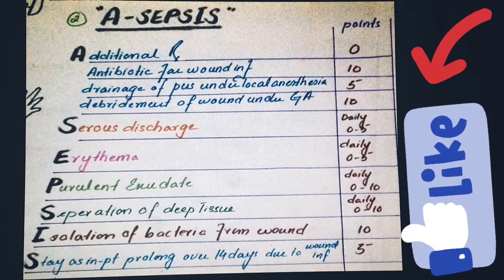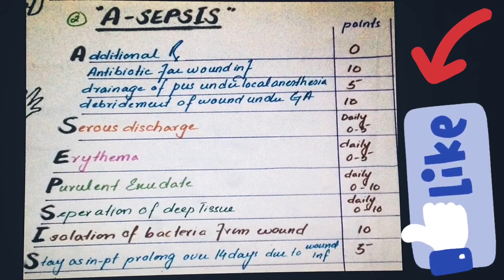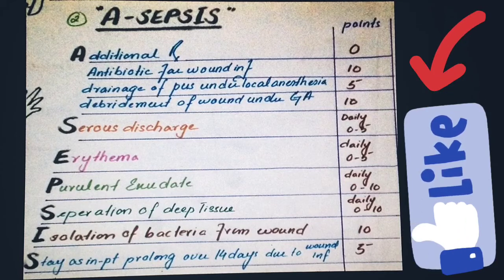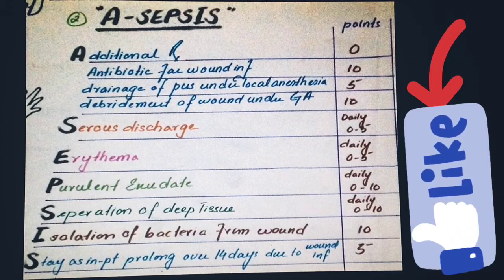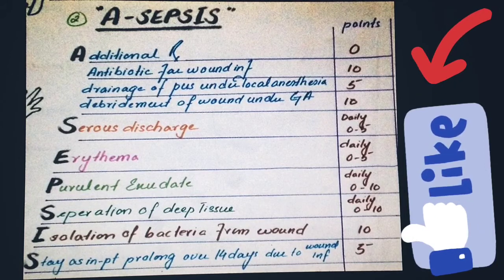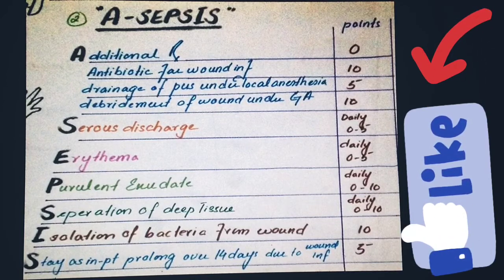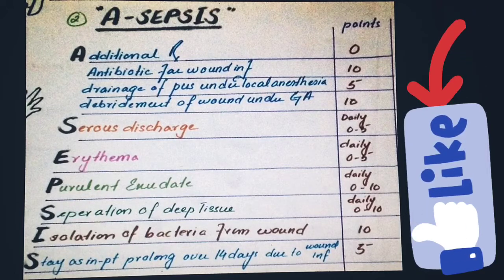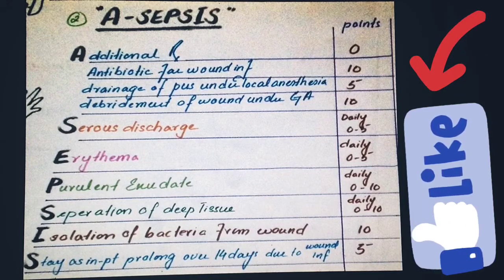In the ASEPSIS criteria, the A indicates additional treatment, granted zero points; antibiotics for wound infection, ten points; drainage of pus under local anesthesia, five points; debridement of wound under general anesthesia, ten points. S indicates serious discharge assessed daily, rated zero to five points. E is erythema, assessed daily, zero to five points. P is purulent exudate, zero to ten points. S is separation of deep tissue, zero to ten points. I is isolation of bacteria from wound, ten points. S is stay in-patient longer than 14 days due to wound infection, five points.